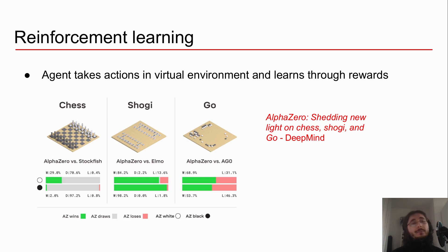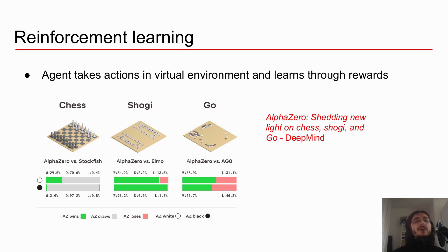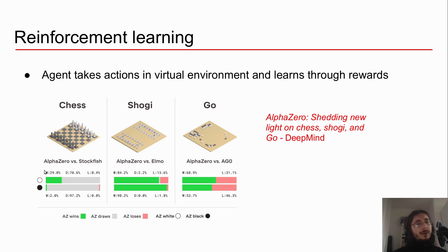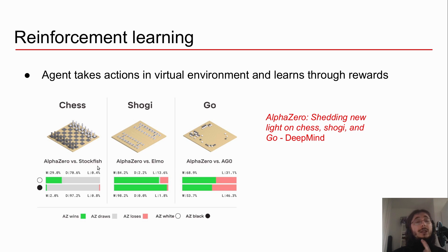By playing loads and loads of chess games against itself, the system learned chess from scratch. In a matter of less than a day, AlphaZero was able to master chess to superhuman level. The very same algorithm was used by DeepMind for cracking chess, shogi, and go. You can see here the results of AlphaZero competing against other top-notch AI systems in chess, shogi, and go — for example, in chess, AlphaZero completely destroyed Stockfish.